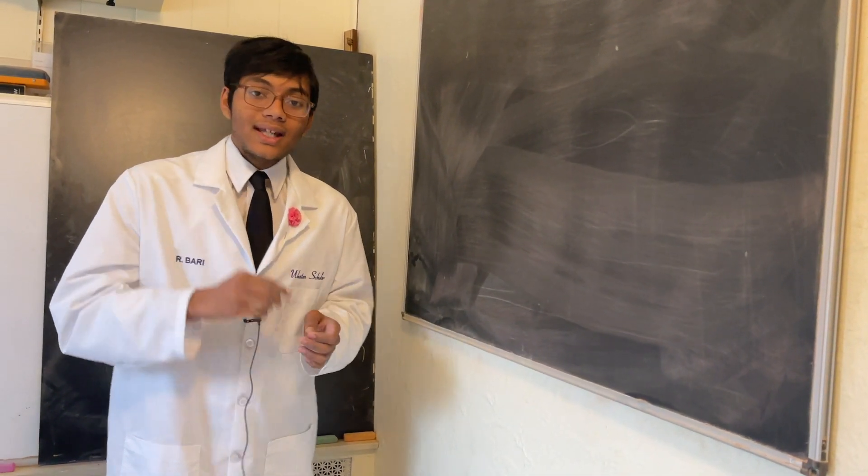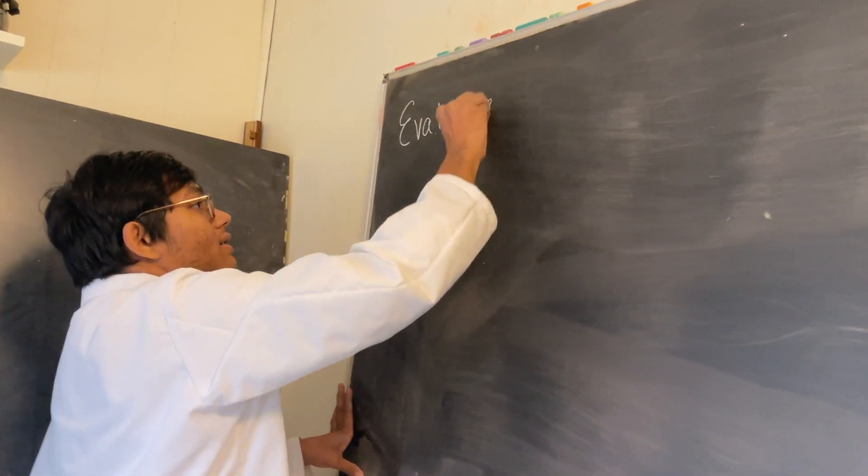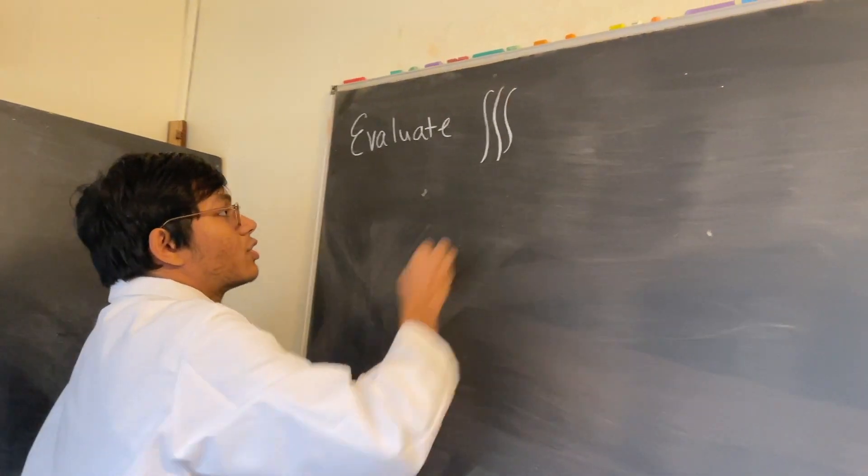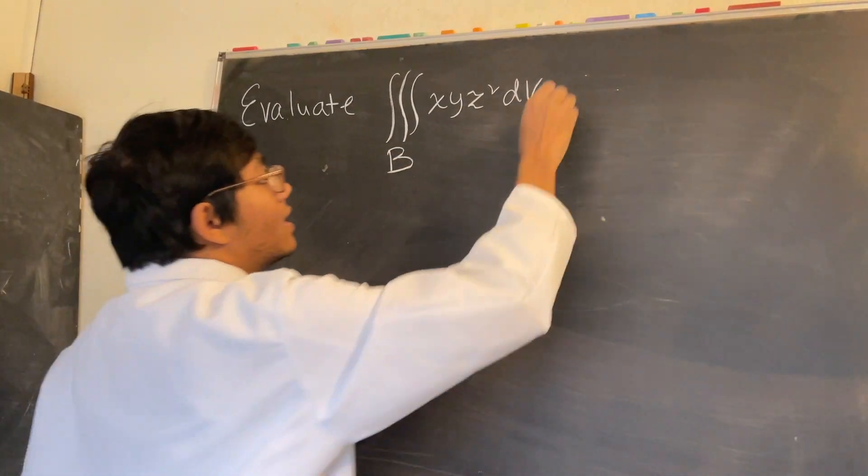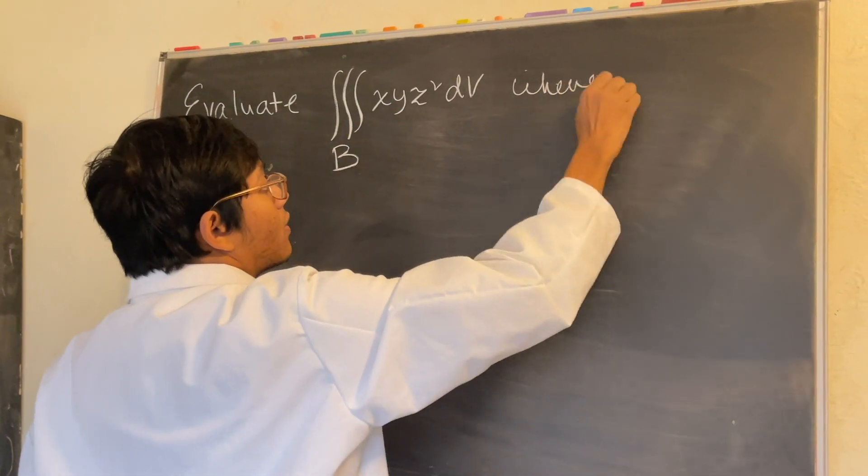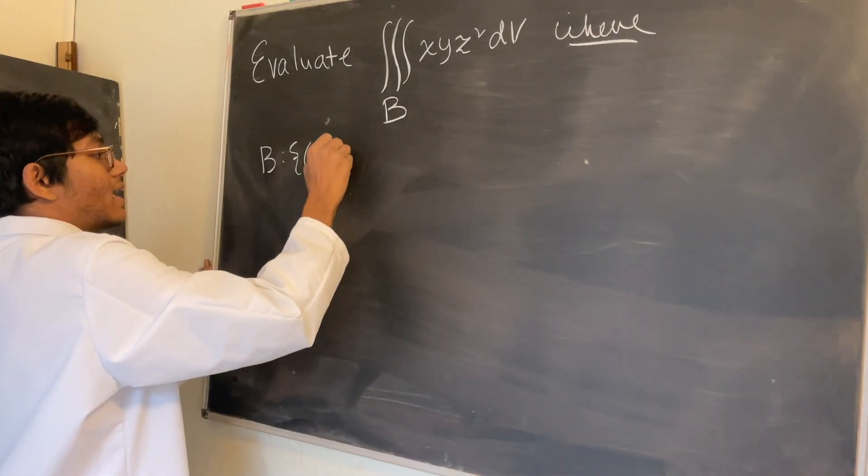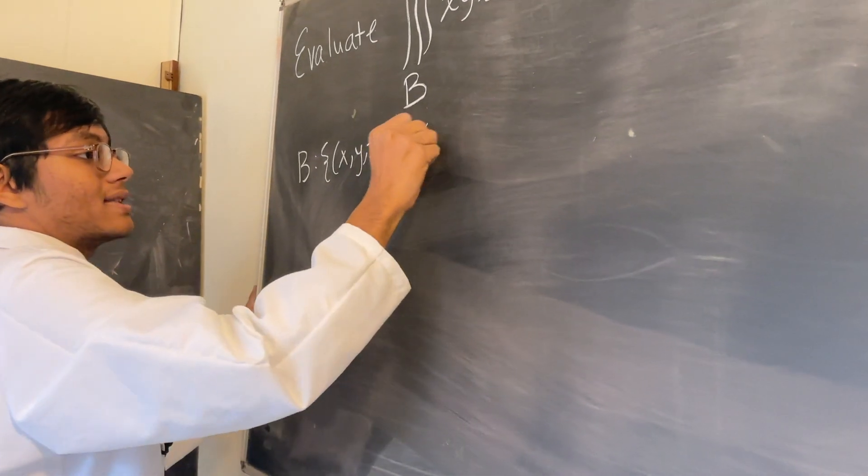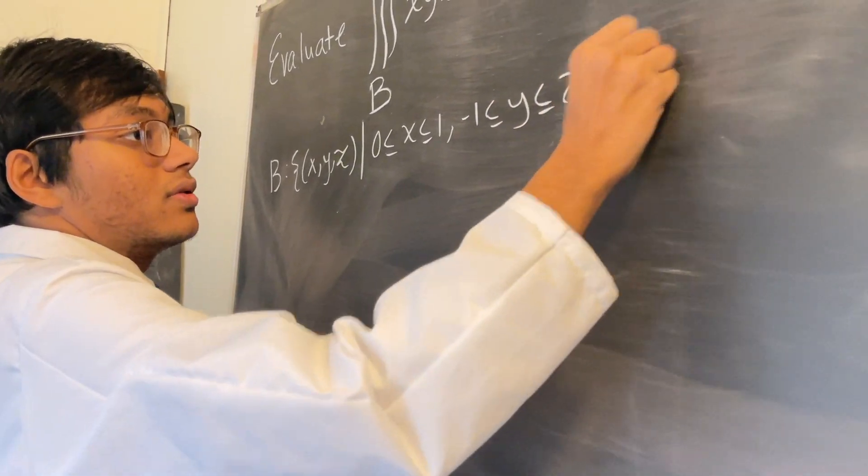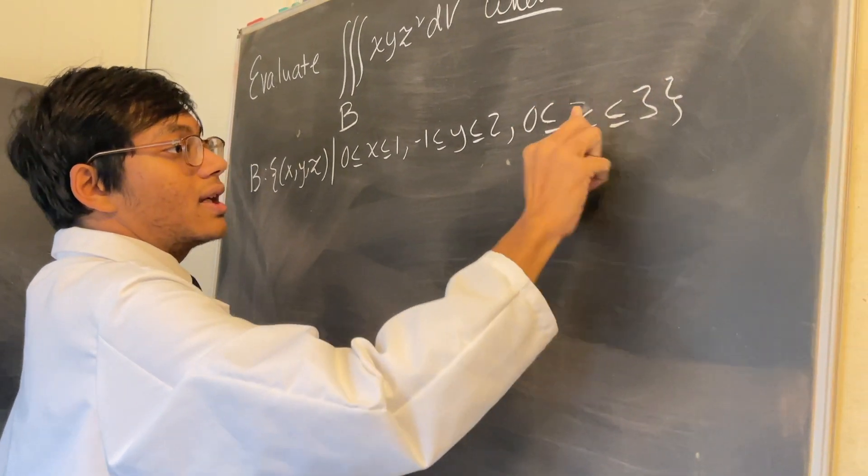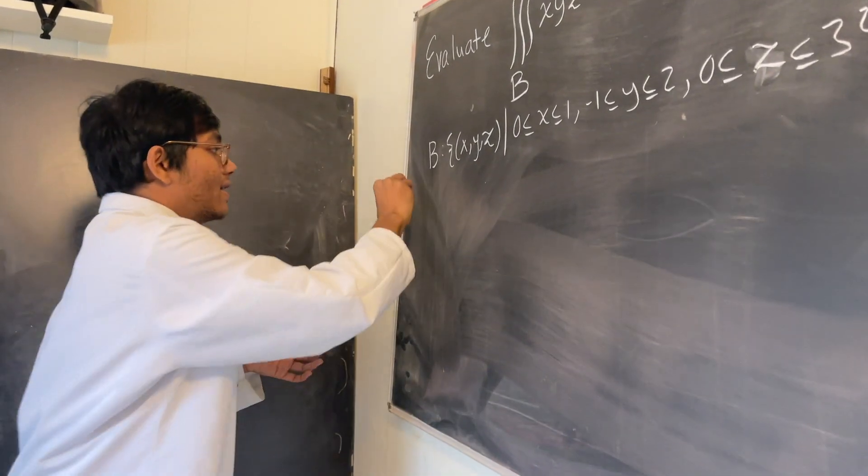Today we're checking out the following problem of triple integration: evaluate this triple integral over the function XYZ² dV over this volume B, where your volume B is defined as follows: B is the set of all points XYZ such that X is between 0 and 1, Y is between -1 and 2, and Z is between 0 and 3.